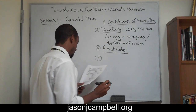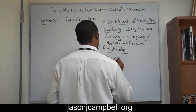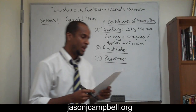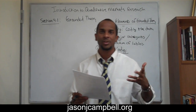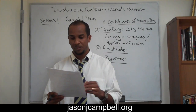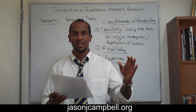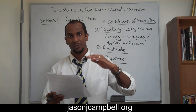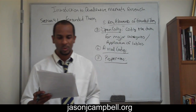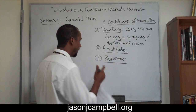Number seven are properties. Properties are characteristics of categories. I'm going to give you what I think is a very good example comparing and contrasting categories from properties, so that you have an understanding of how properties relate to categories. But I'm not going to do that until I discuss this last point, so I'll return to number seven in a little bit.